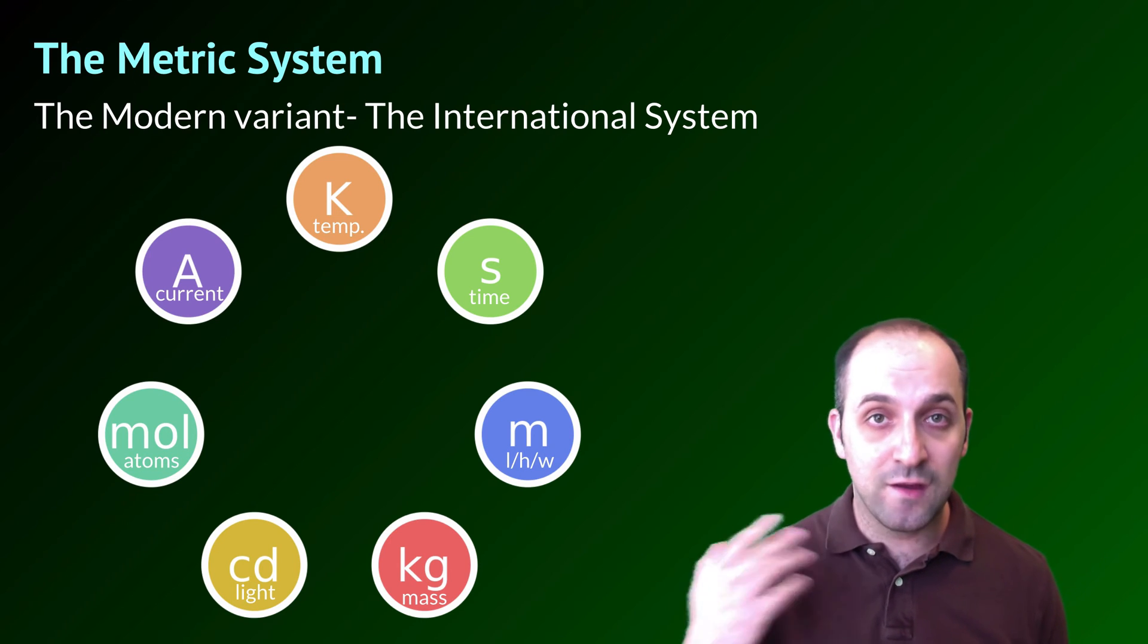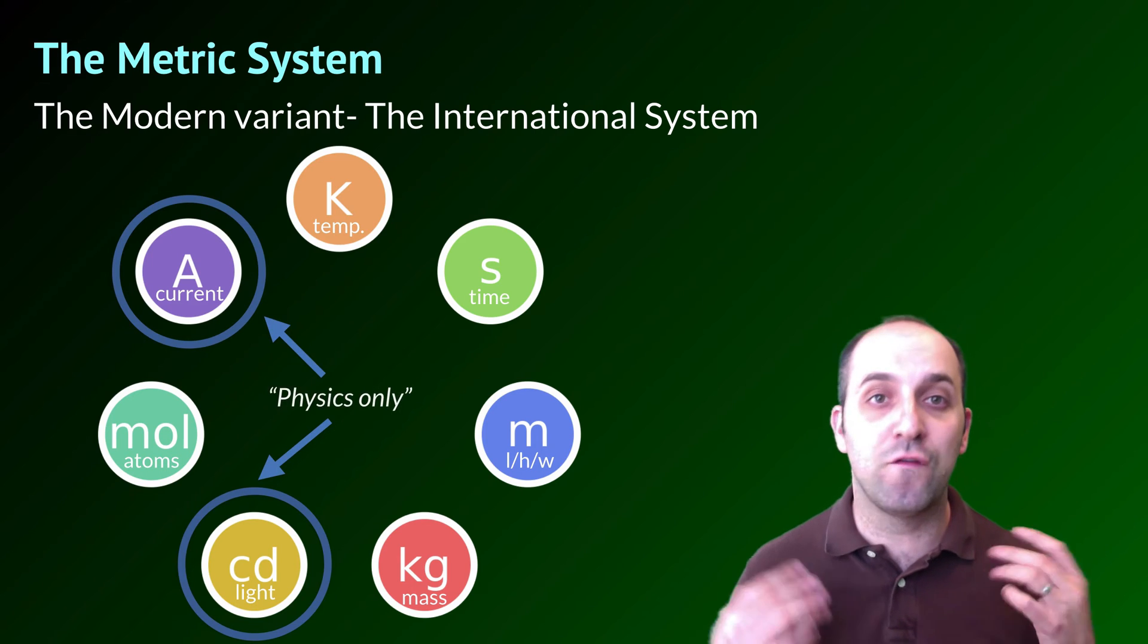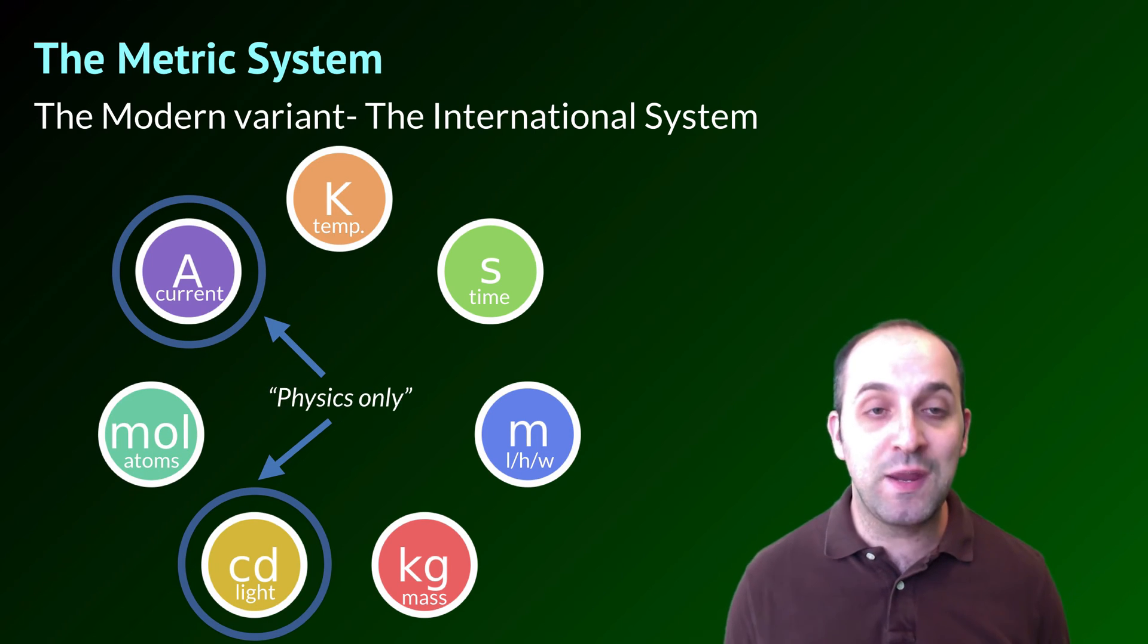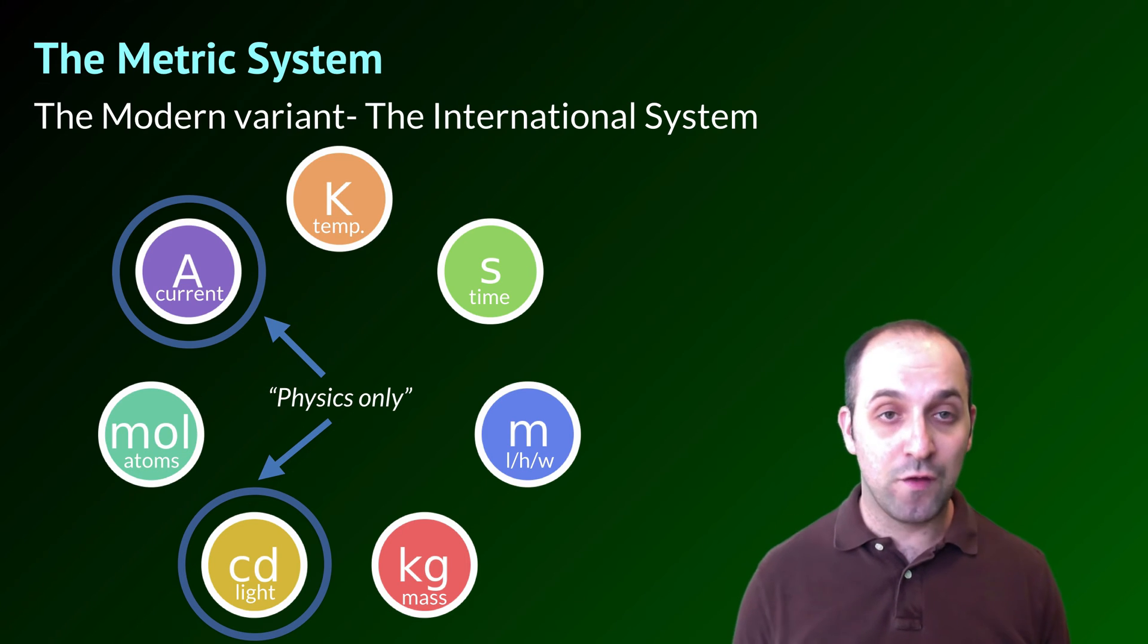And there are seven base units in the system. What's nice about chemistry is that we're really only going to use five of these units. The ampere, which is a measurement of electrical current, and the candela, which is a measurement of luminous intensity, are really only used in physics.